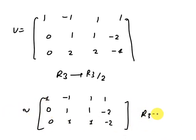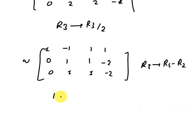So now apply R3 is R3 minus R2. Then we get 1 minus 1, 1, 1, 0, 1, 1, minus 2, 0, 1 minus 1, 0, 0, and this one is 0.